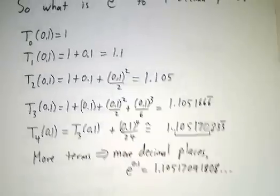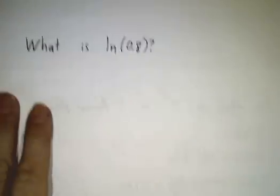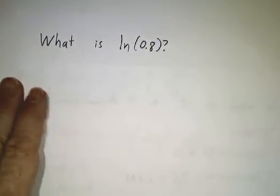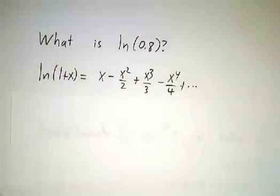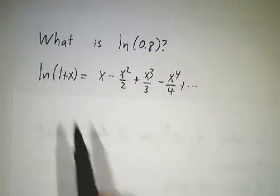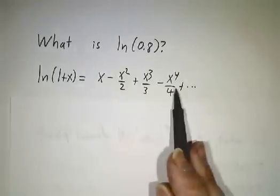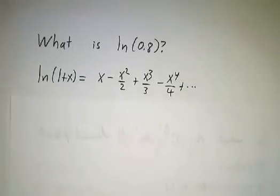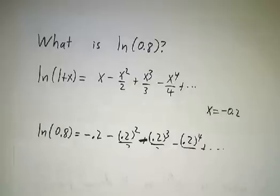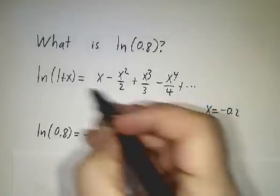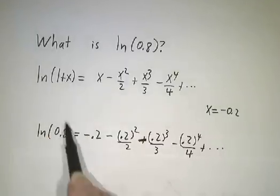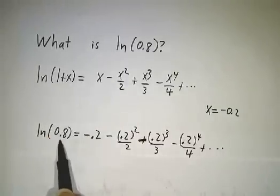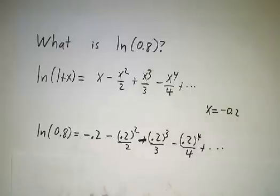So that's evaluating e to the 0.1. You can evaluate other things. Like the natural log of 0.8. Well, we know that there's a function, natural log of 1 plus x, that we have a Taylor series for. We derived this Taylor series a while back. And the natural log of 0.8 is just plugging in x equals negative 0.2. It's the natural log of 1 minus 0.2, that's 0.8. So the natural log of 0.8 can be gotten by plugging in terms.